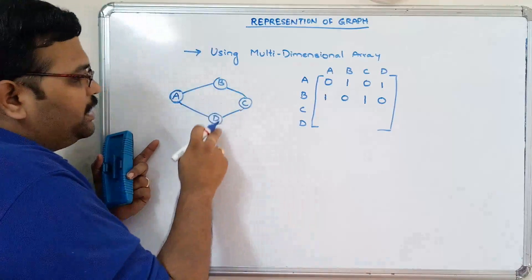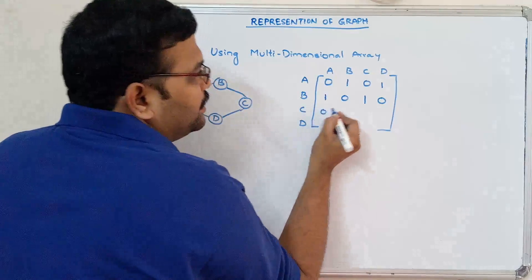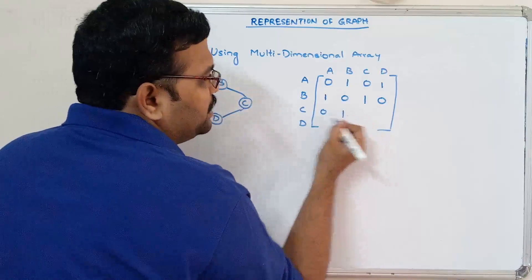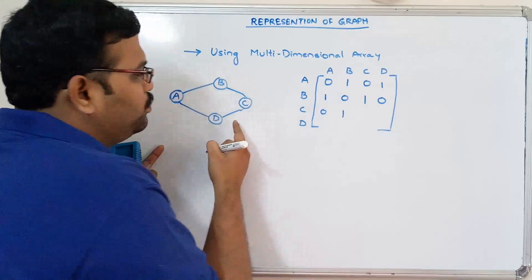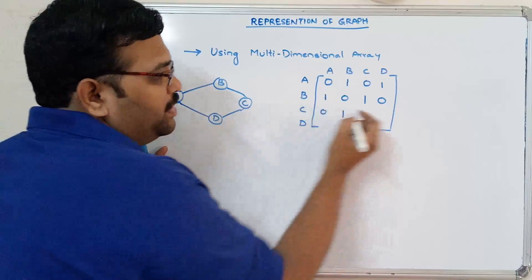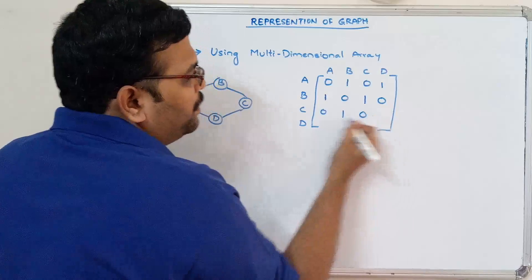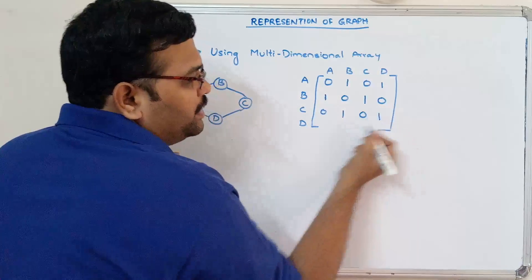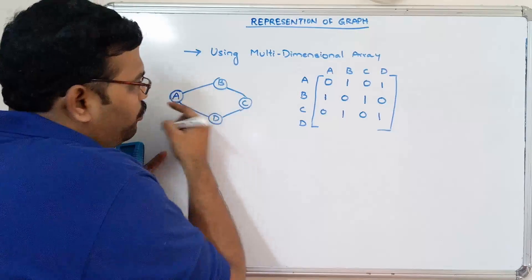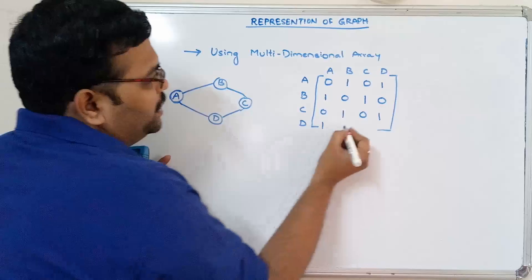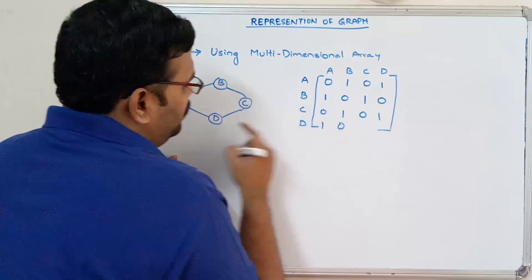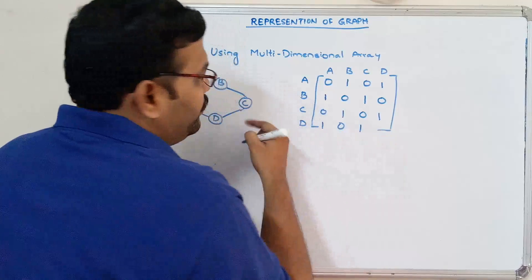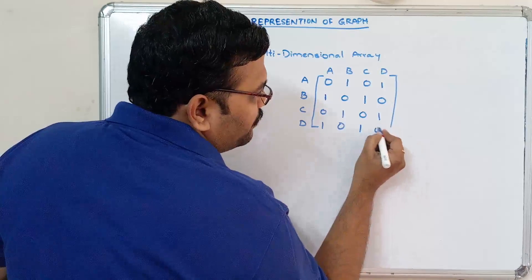Similarly, C to A — no edge. C to B — one edge. C to C — no loop. C to D — one edge. D to A — one edge. D to B — zero. D to C — one edge. And D to D — there is no self-loop.